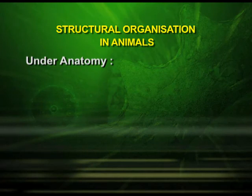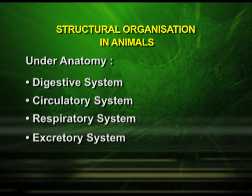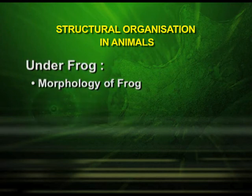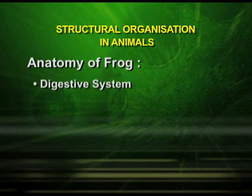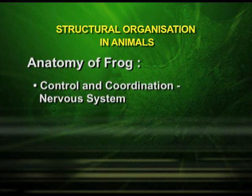A quick recap of this episode: under the anatomy of cockroach we studied the digestive system, circulatory system, respiratory system, sensory organs and reproductive system. Under frog we studied the morphology of frog, and under anatomy of frog we studied the digestive system, respiratory system, circulatory system, excretory system, control and coordination including the nervous system, sense organs, endocrine system and reproductive system. Though earthworm, cockroach and frog all come under the animal kingdom, they have different body organization which differentiates them from each other.